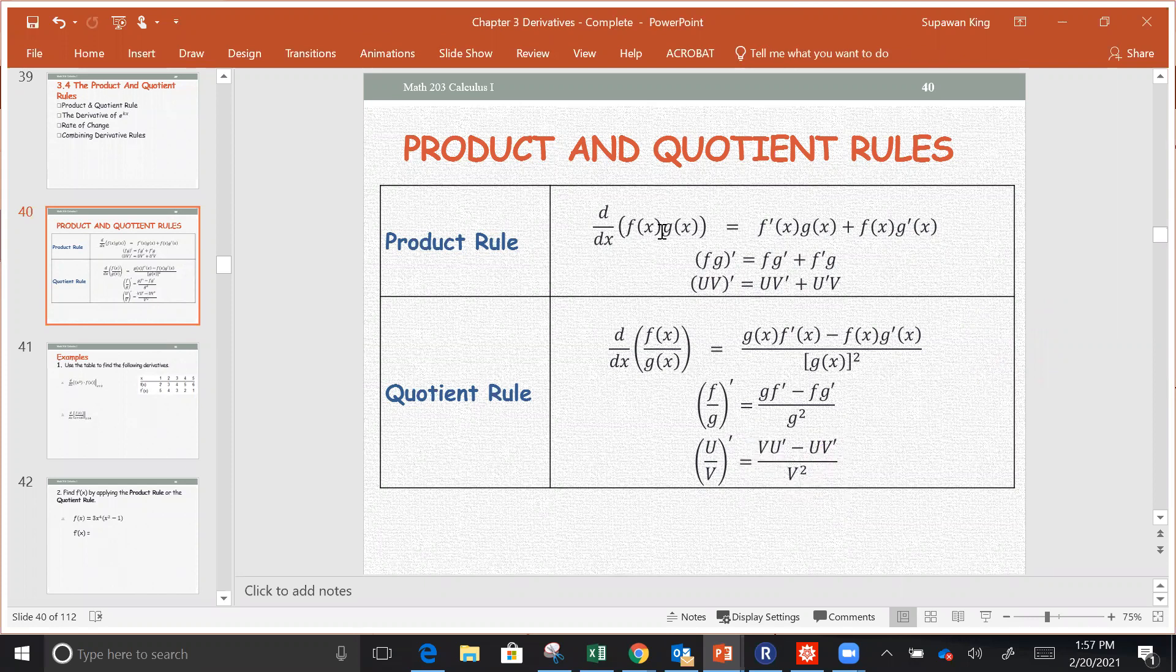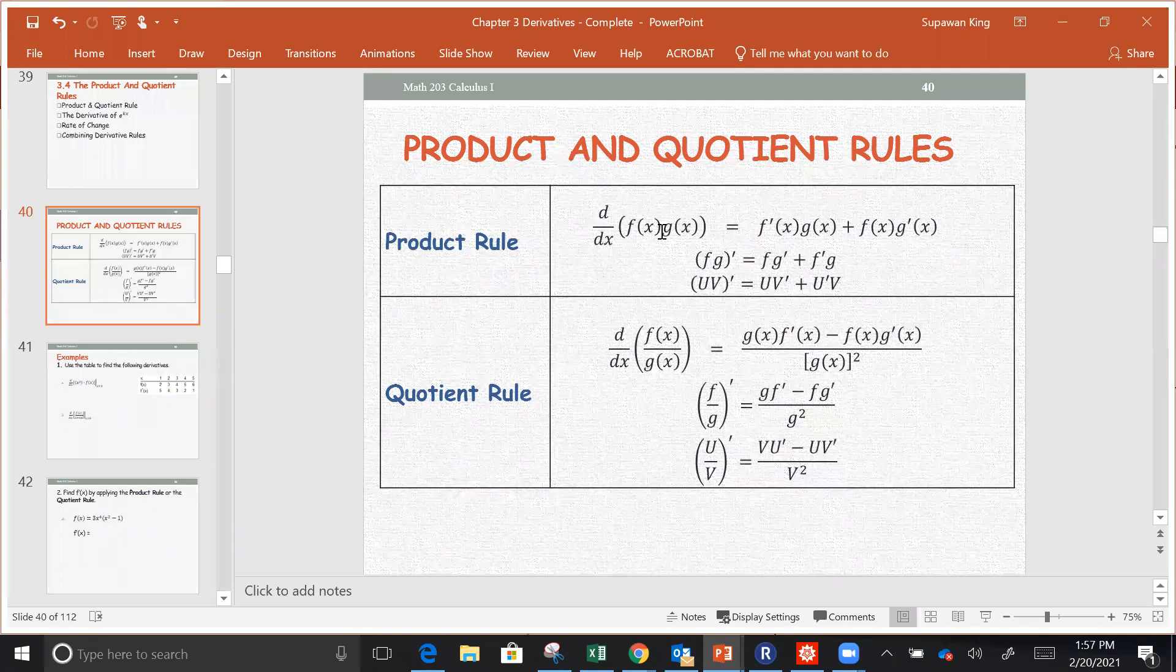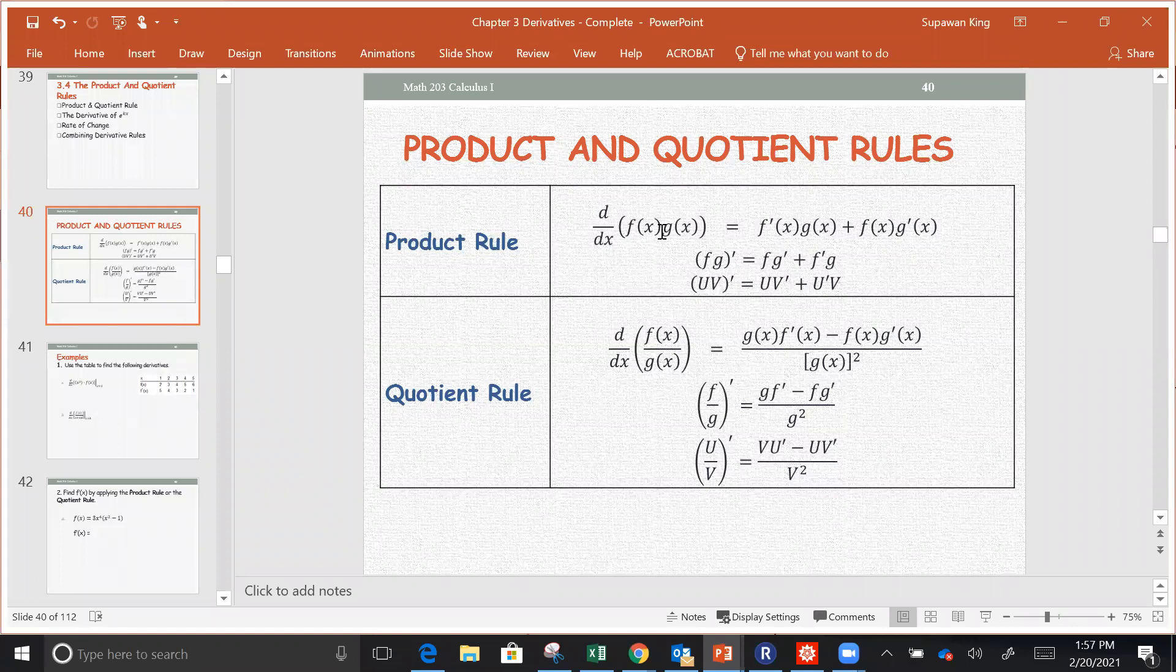Product and quotient rules. The product rule to find the derivative of the product of f and g is f' times g plus f times g'.